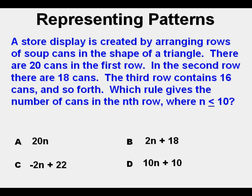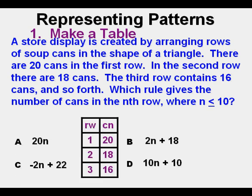It's the same procedure as the last one. We make a table, putting the number of rows on the left: 1, 2, and 3, and corresponding to them the number of soup cans in each row.